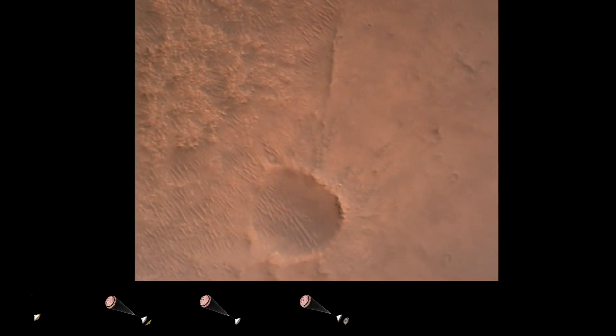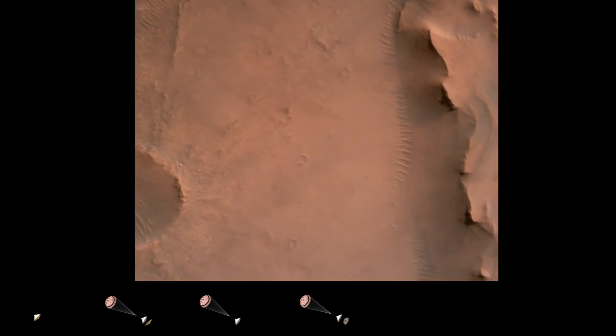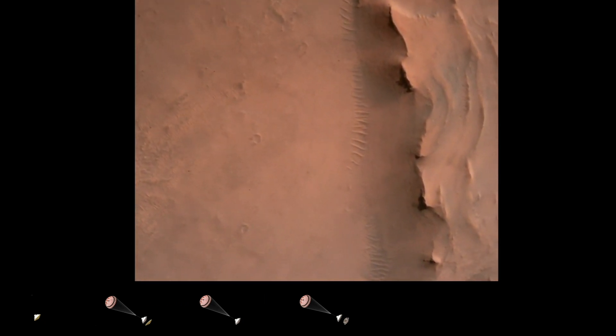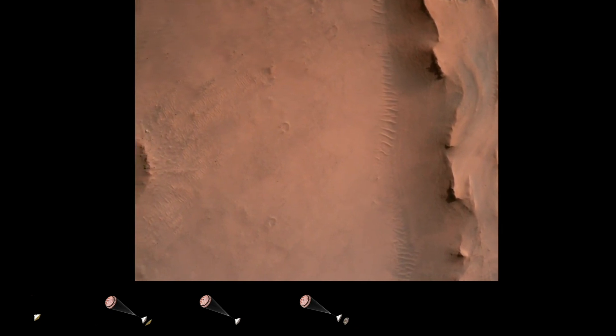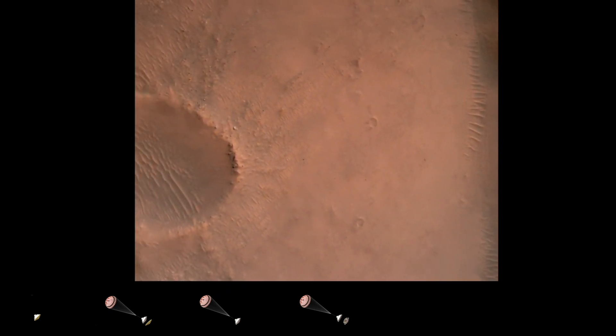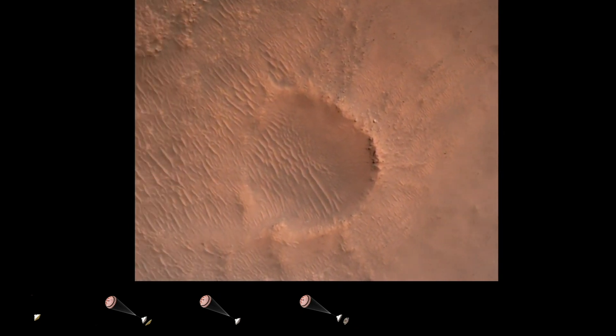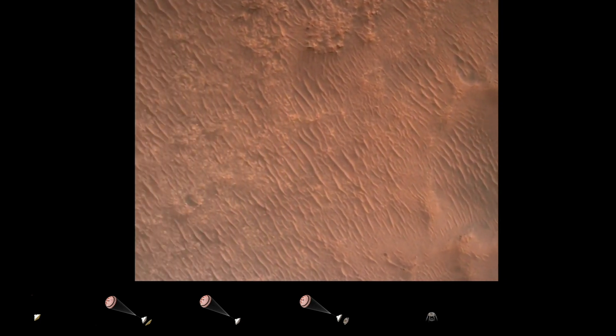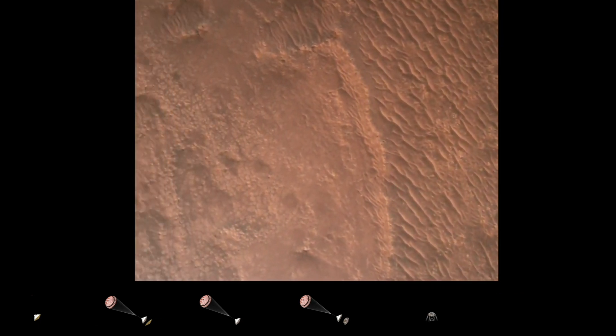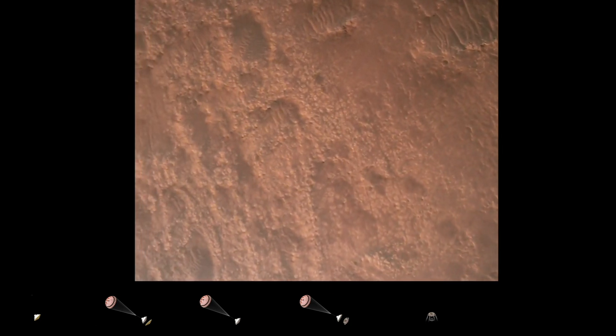Back shell set. Current velocity is 83 meters per second at about 2.6 kilometers from the surface of Mars. We have confirmation that the back shell has separated. We are currently performing the divert maneuver. Current velocity is about 75 meters per second at an altitude of about a kilometer off the surface of Mars.